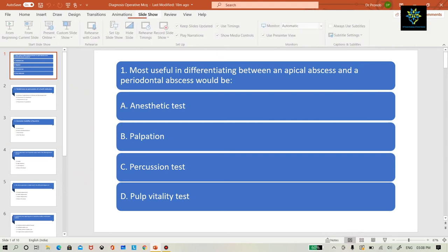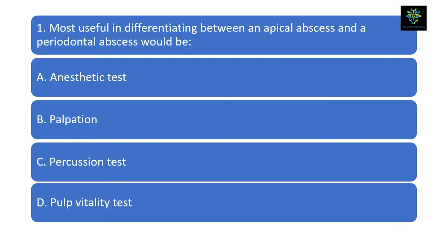In the anaesthetic test, we anaesthetize the specific tooth and then find out which one is affected. In palpation, we use a finger or the end of a mirror to examine. In percussion, we percuss the tooth either apically or periodontally. In the pulp vitality test, we use an electric pulp tester or frozen ice to assess pulp vitality. In the anaesthetic test, we cannot differentiate between apical abscess and periodontal abscess. Same with palpation — both can give the same result. In apical abscess you can get pain, and in periodontal abscess you can also get pain, so we cannot differentiate.